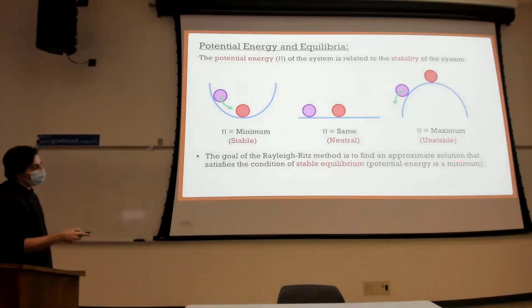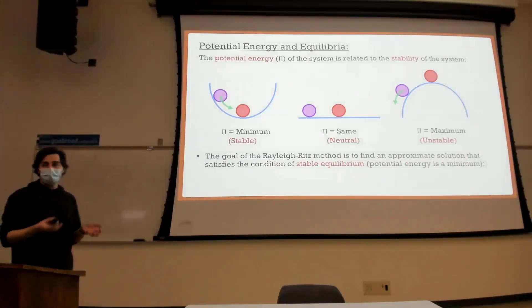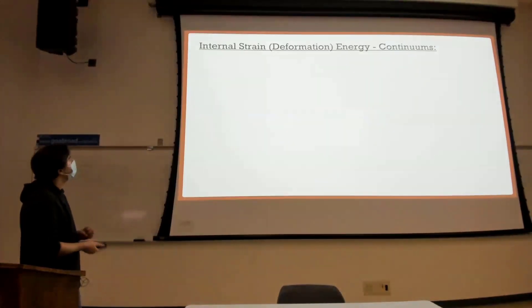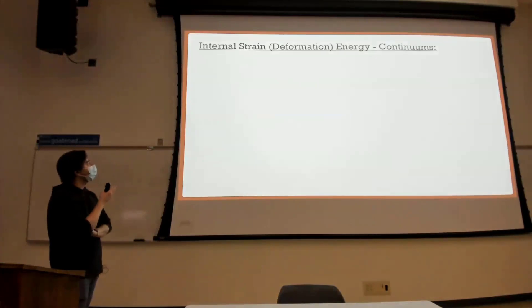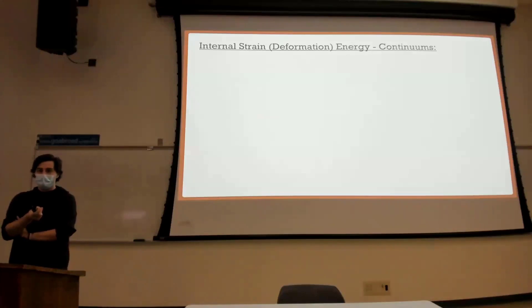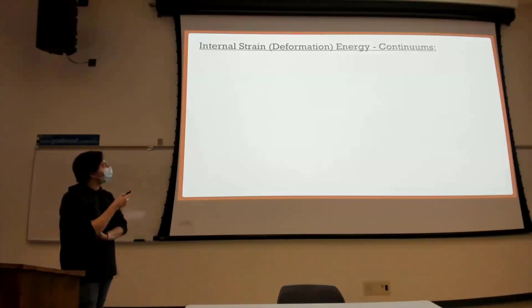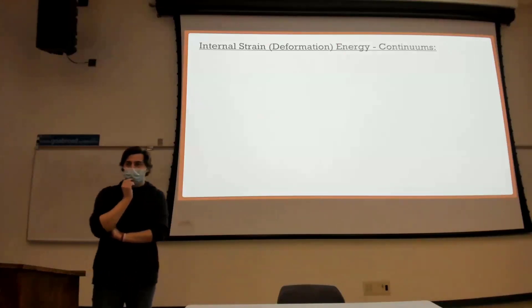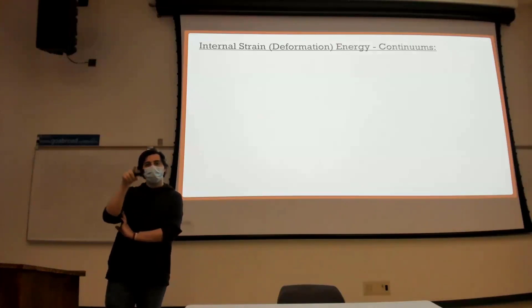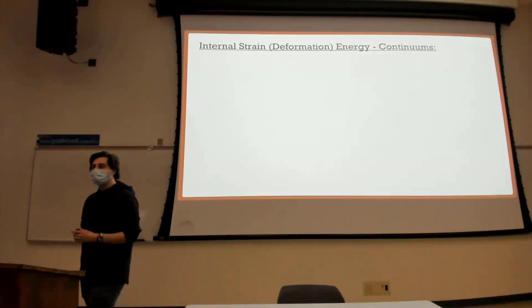So the goal of the Rayleigh-Ritz method is to find an approximate solution that satisfies stable equilibrium. To do this we need two things: internal strain energy and the work done on the system. Who remembers the formula for internal strain energy — the U-bar formula? It was pretty simple.